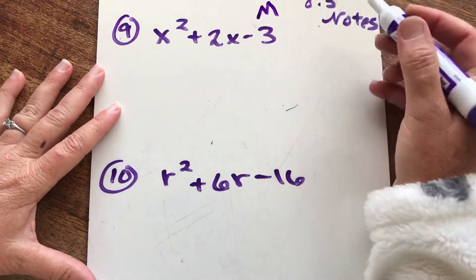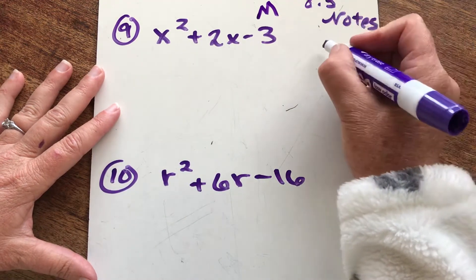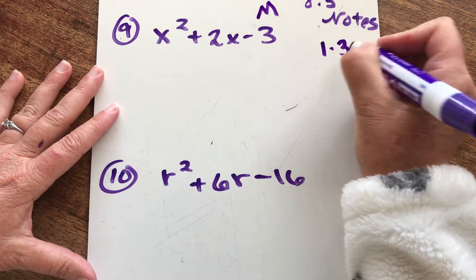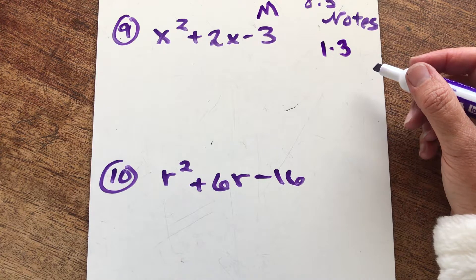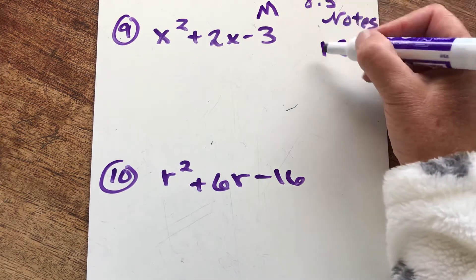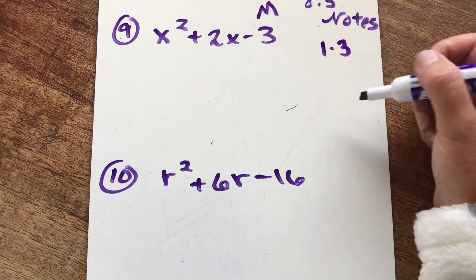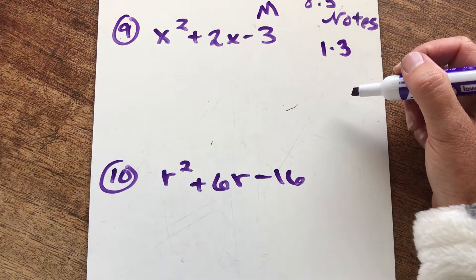First, put an M over the last term and list the factors of three. Well, that's it, folks. The only factors of three are one and three, and those do not add to give you two. They subtract to give you two.